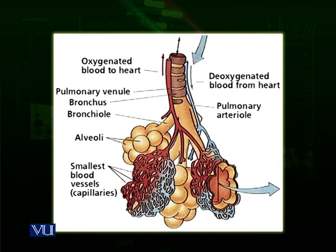The alveoli in the air sacs provide a very large surface area for the exchange of gases, and every alveolus is surrounded by a rich capillary network. So we have two thin epithelia in contact and a very large respiratory surface area. The lung is therefore an ideal surface for the exchange of gases.